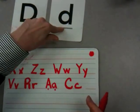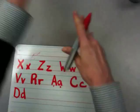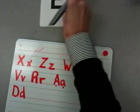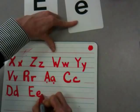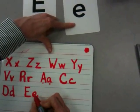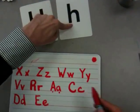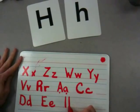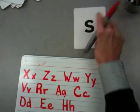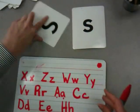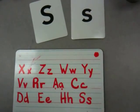Uppercase B, lowercase D. Uppercase D, lowercase d. Uppercase E, lowercase E is beneath the line. Uppercase E and lowercase E. Uppercase H and lowercase H. Uppercase S, lowercase S. Uppercase S, lowercase S.